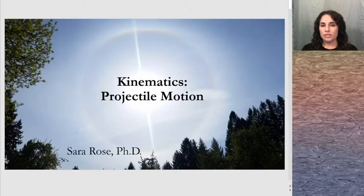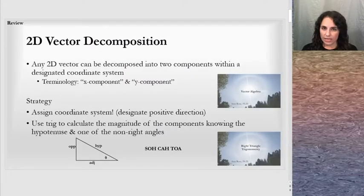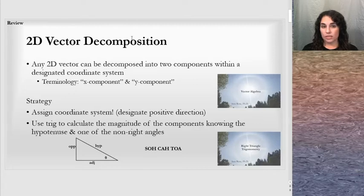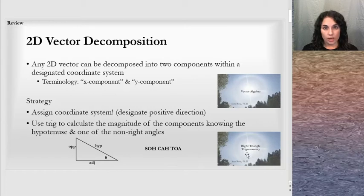We're going to see many different things learned so far coming together. In review, we will need to keep in mind 2D vector decomposition with x and y components, and strategies of assigning a coordinate system and other right triangle trigonometry techniques in order to have x and y components with vector decomposition.